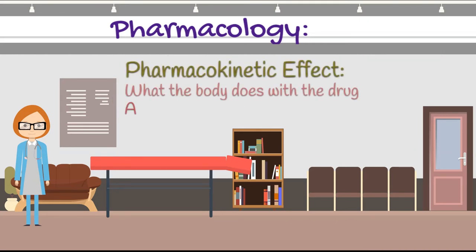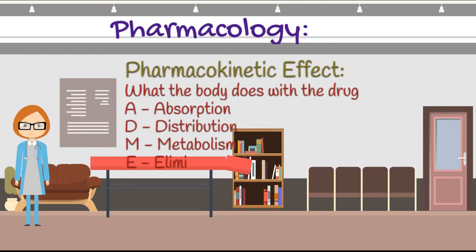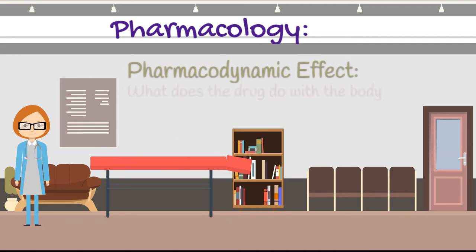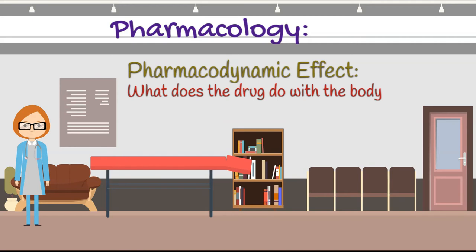Pharmacokinetic effect is about what the body does with the drug — that is, absorption, distribution, metabolism, and elimination. Whereas pharmacodynamic effect is about what the drug does with the body, including cellular effects or systemic effects.